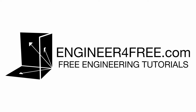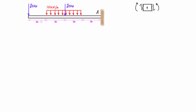Welcome back. In this video we are looking at practice problem number five for drawing shear force diagrams and bending moment diagrams of various beams subjected to various loadings. We've got a cantilever beam with some point loads and distributed loads, and in this case the support for the cantilever beam is on the right-hand side. I want to demonstrate that sometimes the support will be on the left and sometimes on the right.